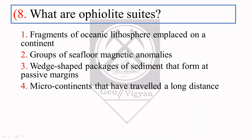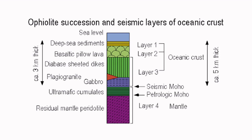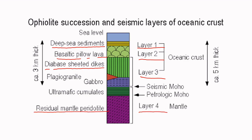The next question is: what are ophiolite suites? Ophiolite is a sequence of rock consisting of deep-sea marine sediments overlying pillow basalt, sheeted dykes, gabbro, dunite, and peridotite. This is a direct question from the definition of ophiolite. The right answer is fragments of oceanic lithosphere emplaced on a continent. The layers of ophiolite succession are: deep-sea sediments, basaltic pillow lava, sheeted dykes, and residual mantle peridotite.